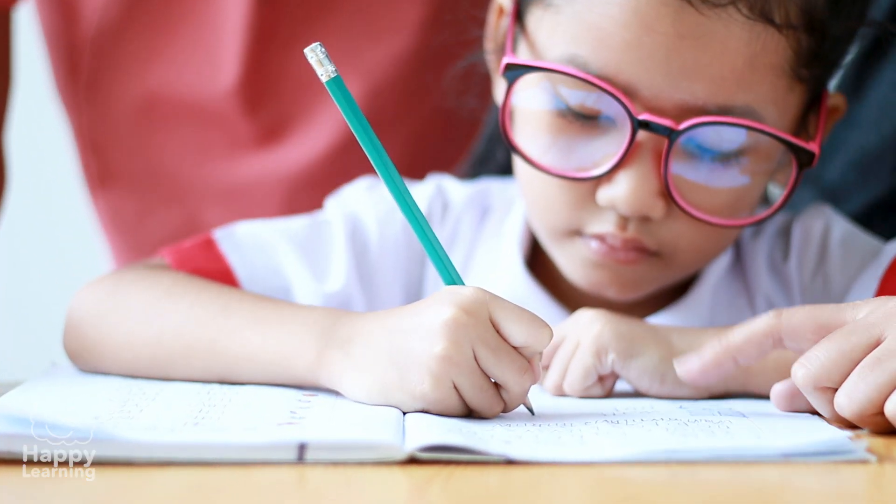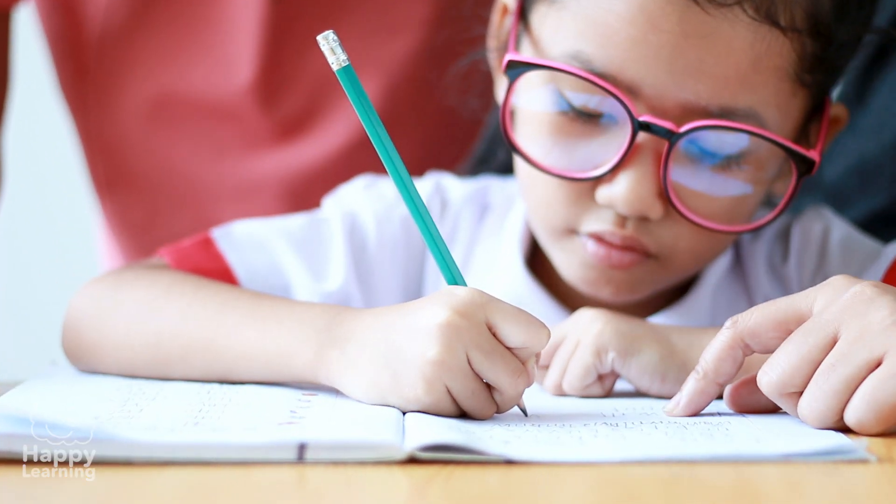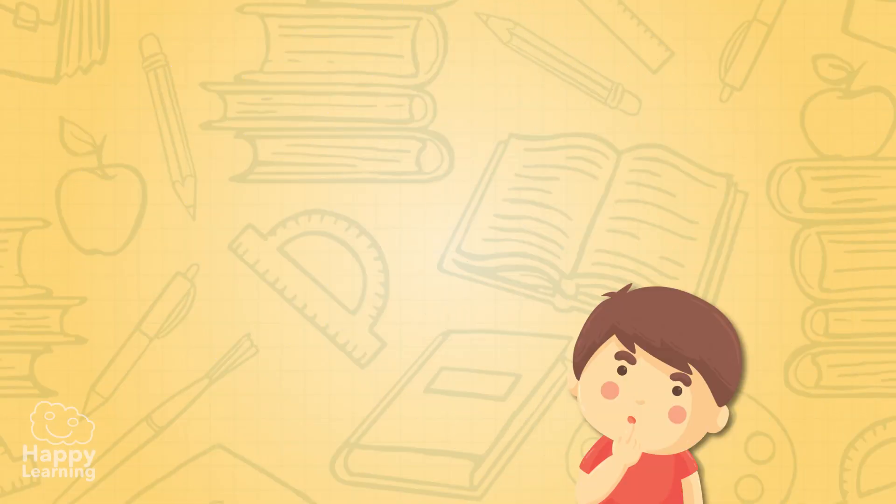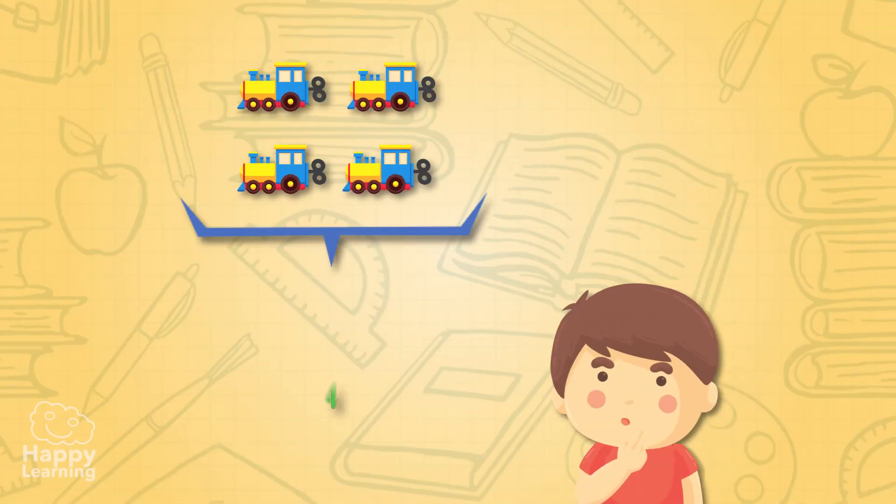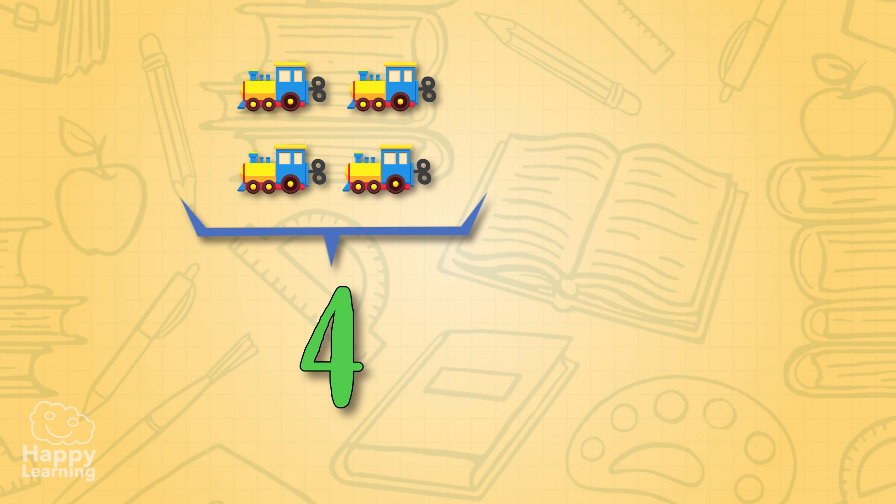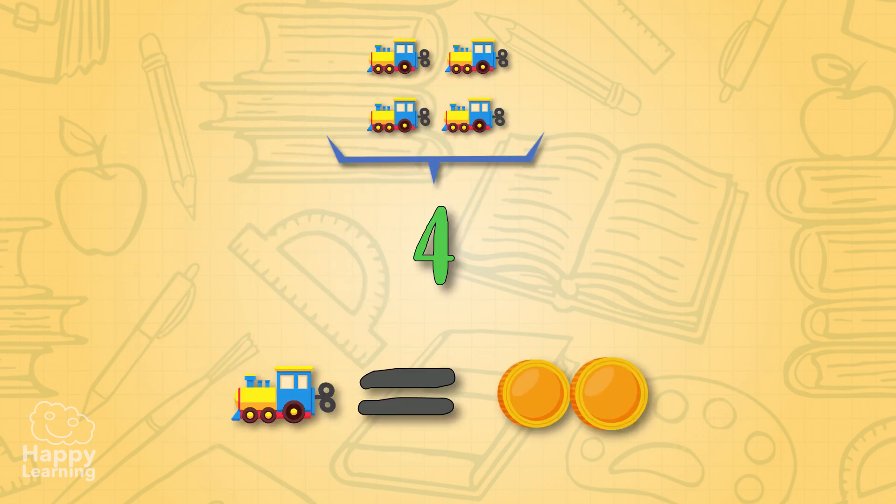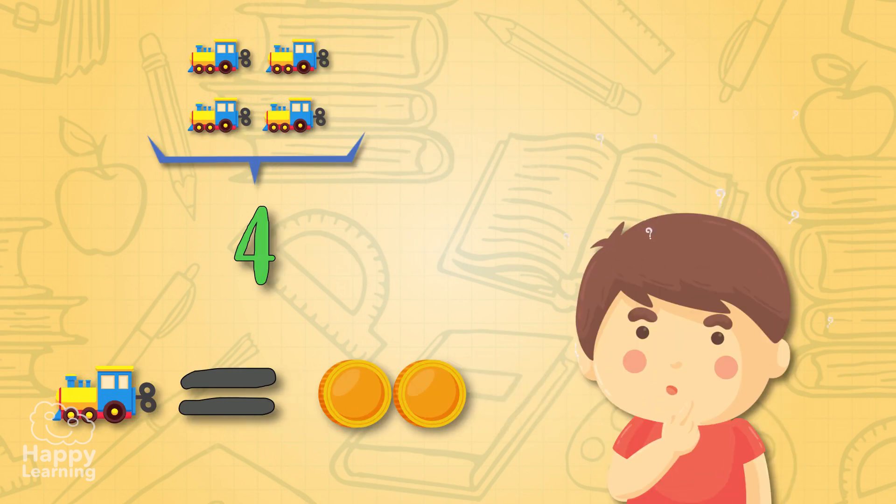Knowing how to multiply is very important for life in general. Let's imagine that we want to buy four toys and each toy costs two coins. How much money do we need to take to the shop to buy all four toys?